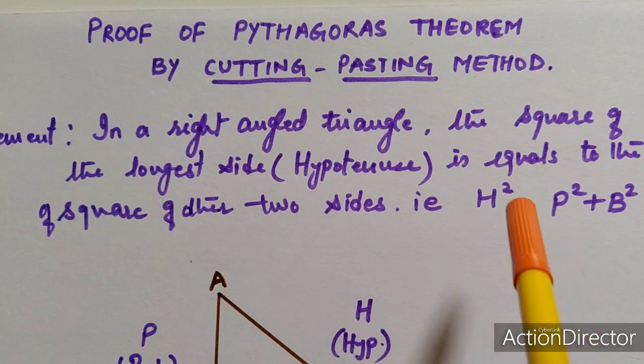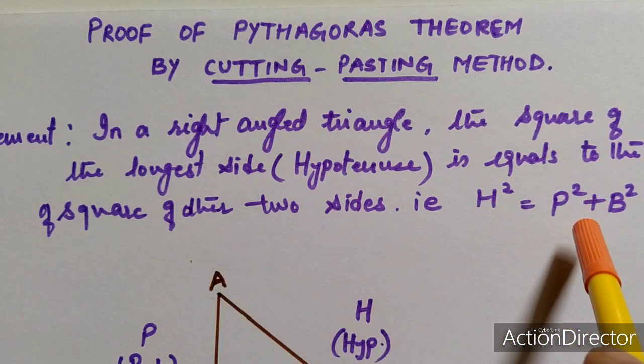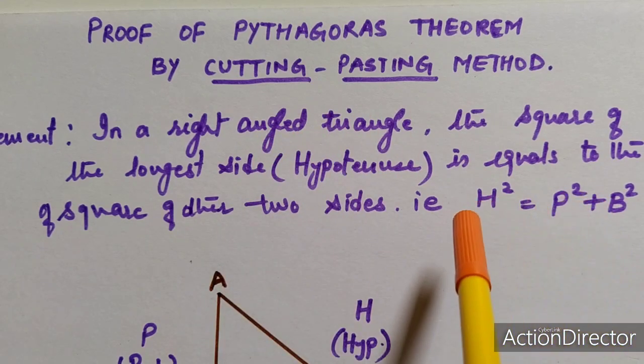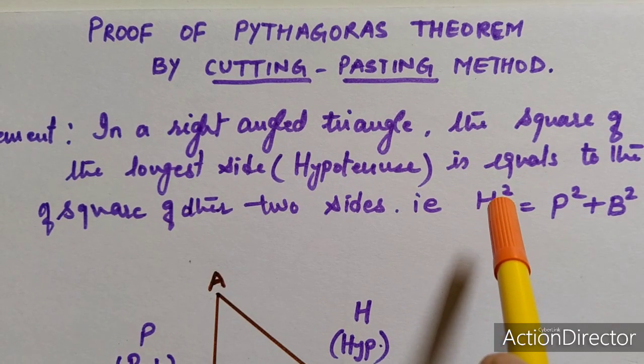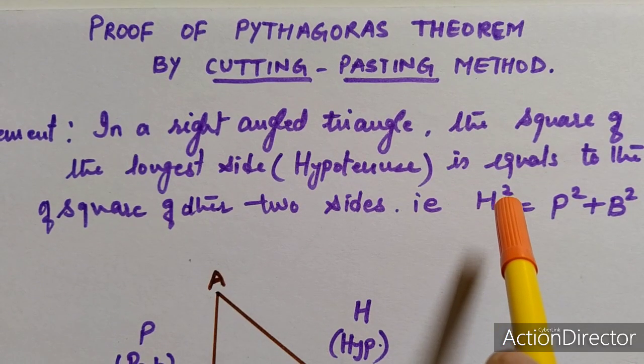According to the statement we can write this also. Always remember, hypotenuse is the longest side of a right angle triangle.